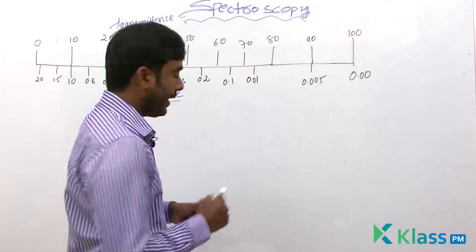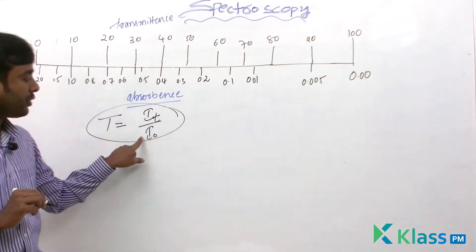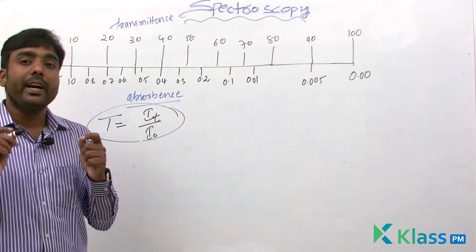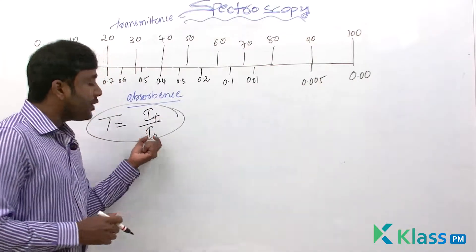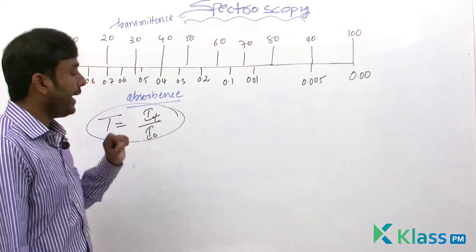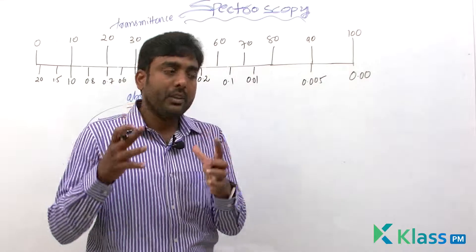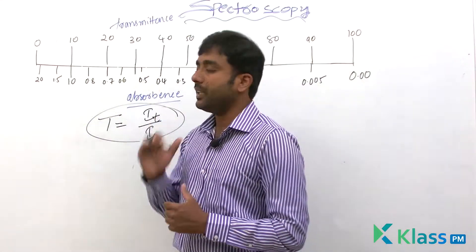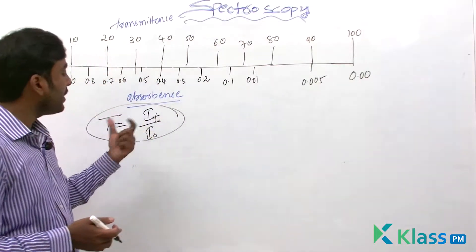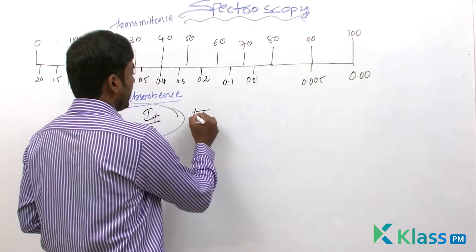Transmittance T = IT / I0. I0 is the intensity of incident radiation and IT is the intensity of transmitted radiation. Some of the radiation is absorbed and the remaining is transmitted through the sample as IT. The spectrophotometer measures either transmittance or absorbance. We generally express it as percent transmittance, T%.